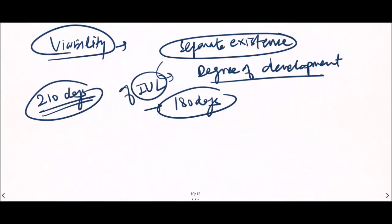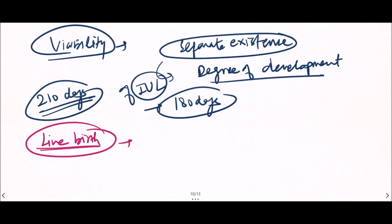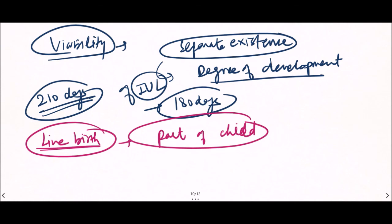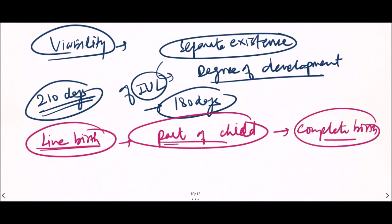Live birth means the child shows signs of life when only part of the child was out of the mother. It is not necessary for the child to be completely born — only part of the child needs to be out of the mother when signs of life are shown. The signs of life at birth during autopsy will be discussed in the next video. Thank you so much and keep watching; we will be covering infanticide in coming videos.